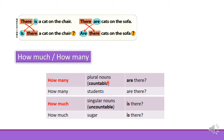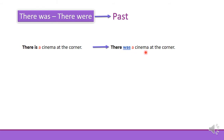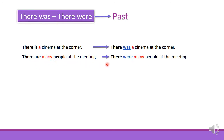We will cover countable and uncountable nouns in our next video. There was and there were — we use these expressions to refer to the past. For example, there is a cinema at the corner is a present sentence. In past tense we say, there was a cinema at the corner. There are many people at the meeting becomes, in past tense, there were many people at the meeting.